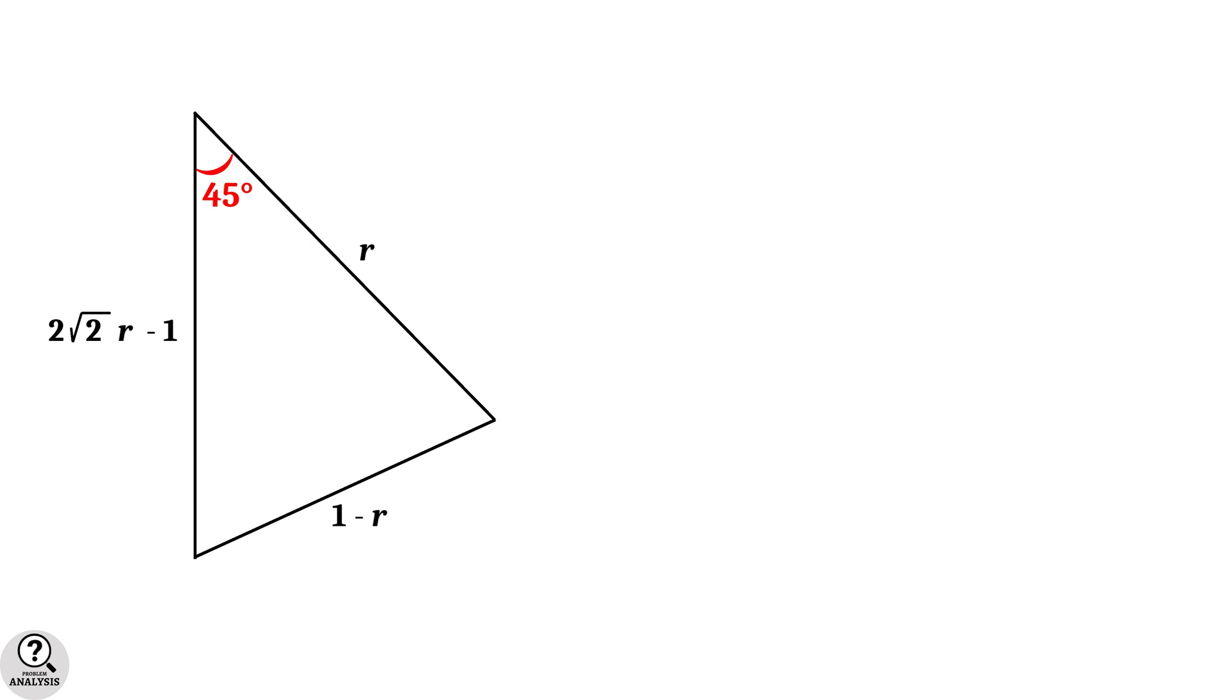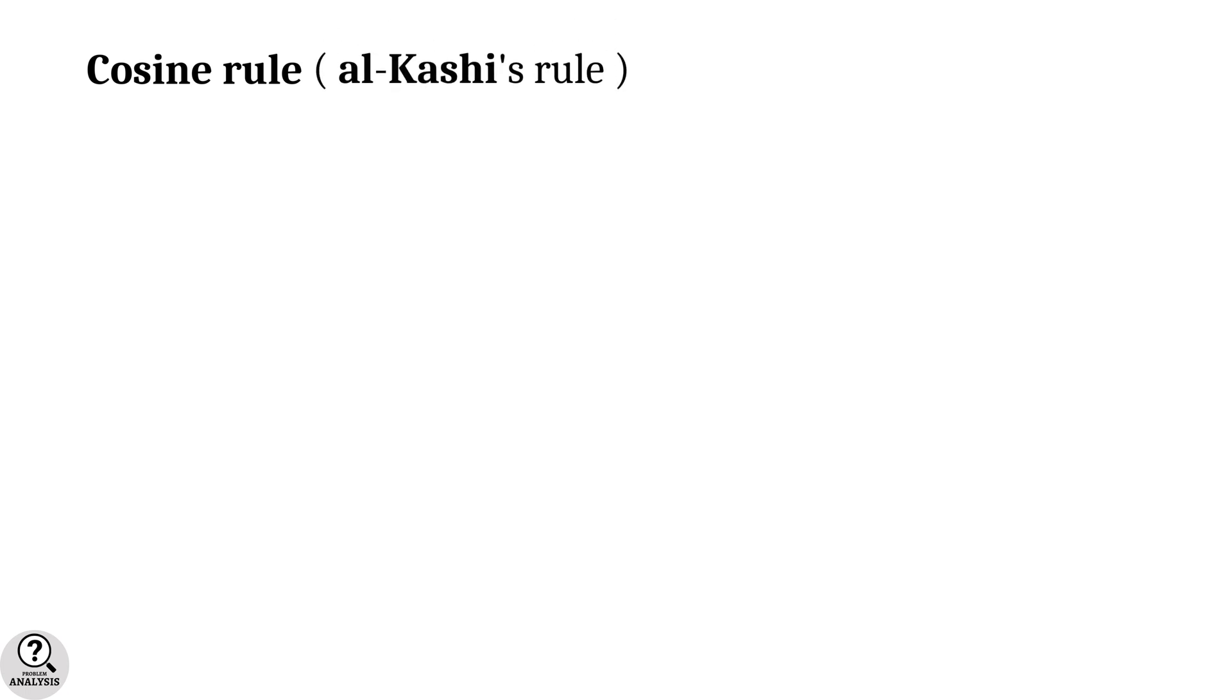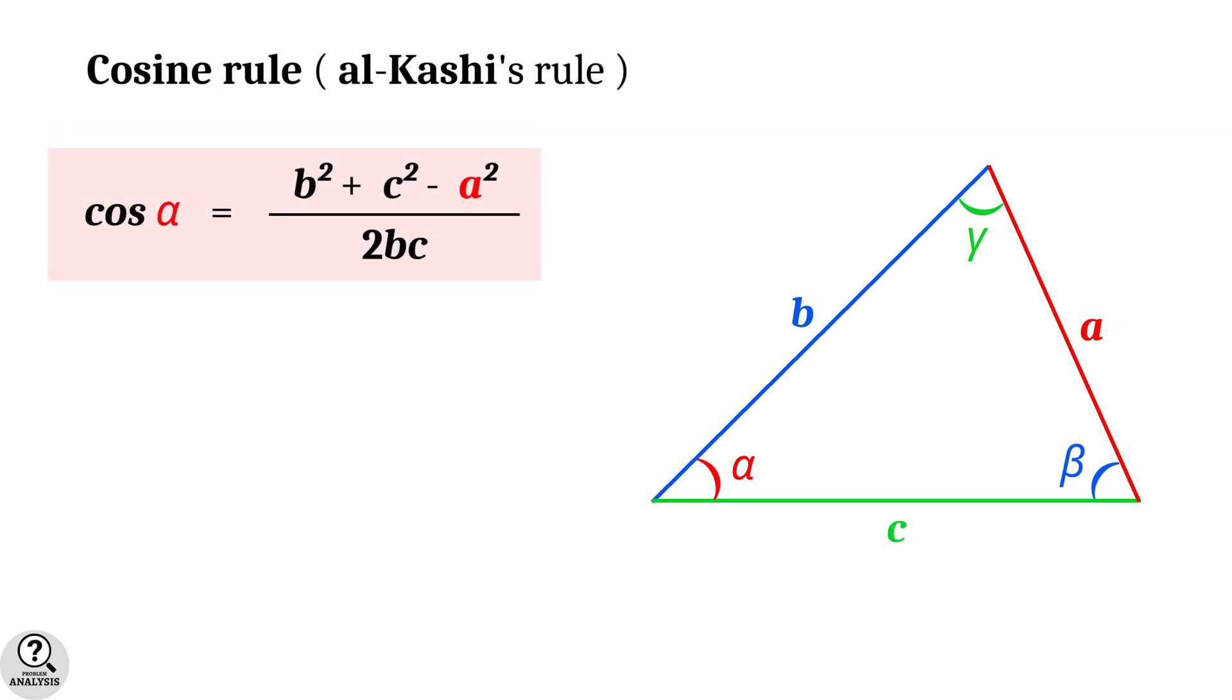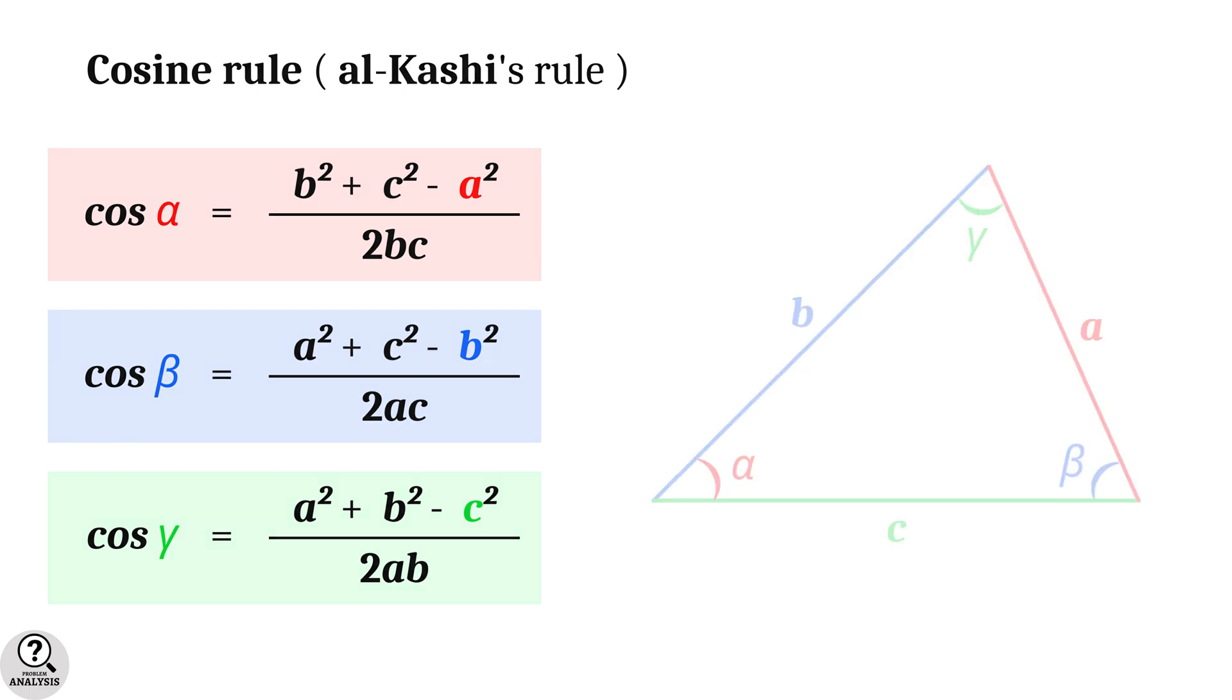In order to find the value of r, we need to note an important rule in geometry. It is called cosine rule or also known as al-Kashi's rule. For that, consider a triangle. Suppose the three angles are denoted by alpha, beta, and gamma. The side opposite to angle alpha is denoted by a, side opposite to angle beta is b, and the side opposite to angle gamma is c. Then the cosine rule formula is cos alpha equal to b square plus c square minus a square whole divided by 2bc. Similarly, for the remaining angles, the formulas are like this. These formulas can be used to find the angles of a triangle when sides are given.